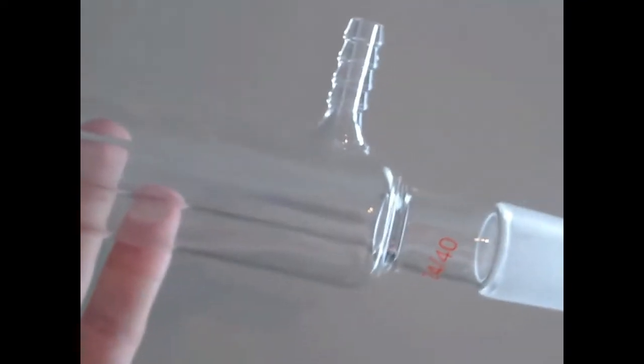This is the condenser, which contains a tube within a tube. This is so water can enter the outer tube, encasing the inner tube in a cold environment.